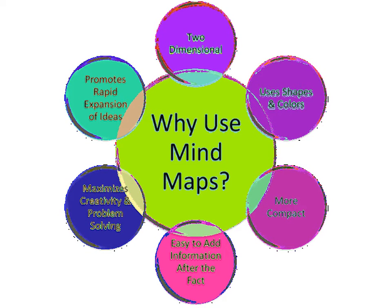Why use mind maps? Mind maps abandon the list format of conventional note taking in favor of a two-dimensional structure. They show the shape of a subject, the relative importance of individual points, and the way in which facts relate to one another. They use shapes, colors, and dimensions as visual stimulus, further adding to the power of this simple tool. Mind maps are more compact than conventional note taking, often taking up just one side of paper, which helps to make associations easily.